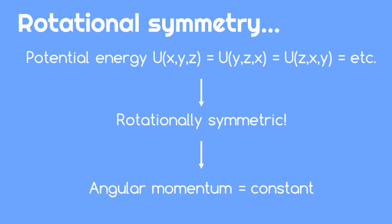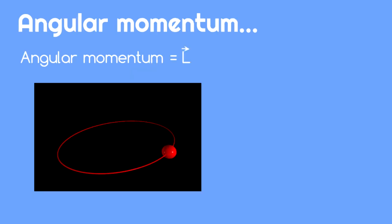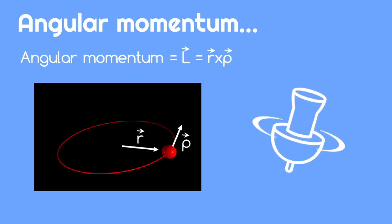One of the consequences of being rotationally symmetric is that a quantity called angular momentum is kept constant. Angular momentum is a vector calculated as the cross product between the position vector and the momentum vector. In simple terms, it's the spinniness of a system.